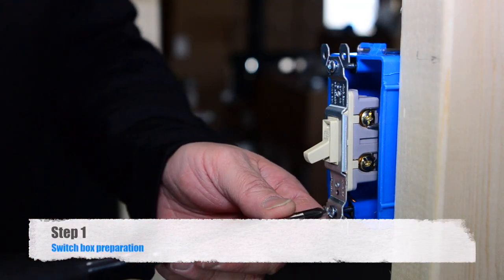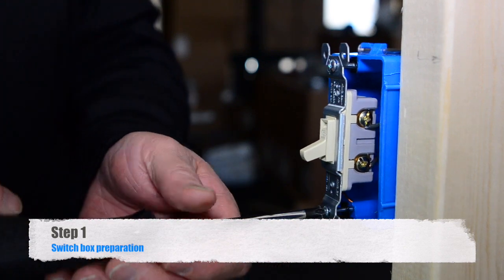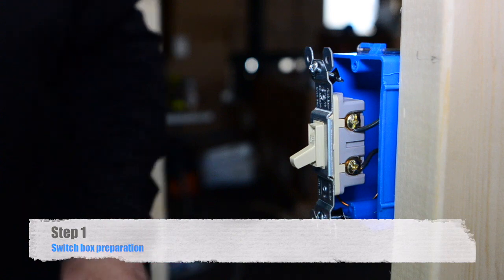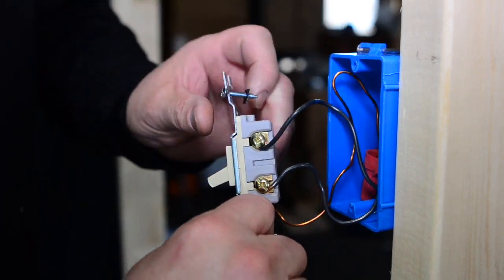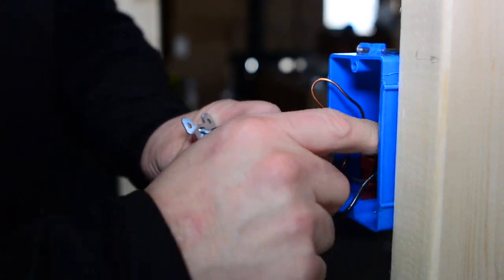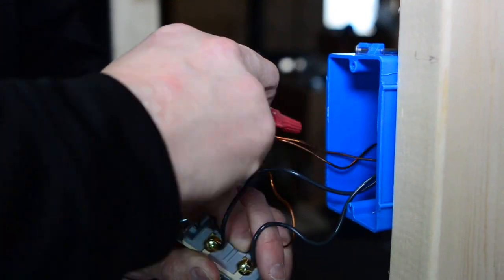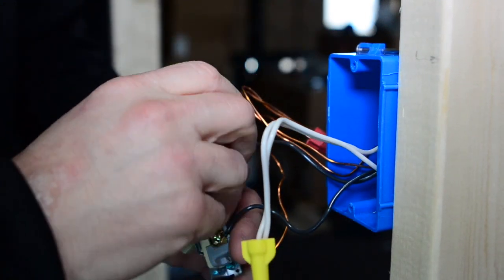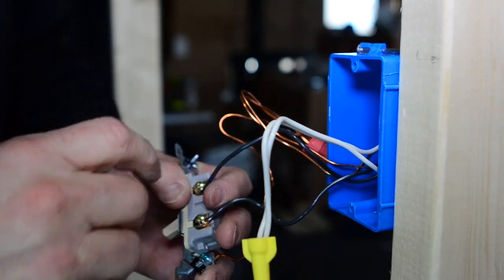First we are going to go to the switch box. We are going to unscrew that switch, pull it out of there. So we are trying to accomplish two things here right now. We are trying to run constant power up to the fan, and also we are getting this box ready to fish a wire down from the attic into this box.